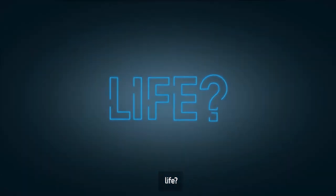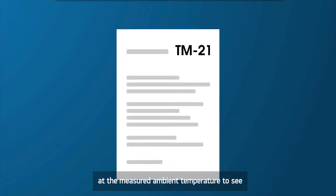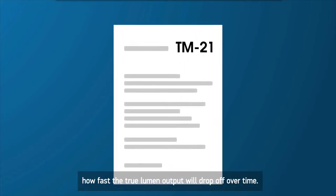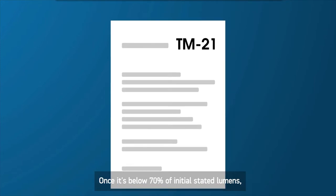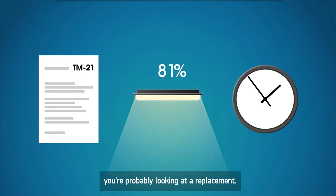And what about life? How long will those lights really last? Ask the manufacturer for TM21 data at the measured ambient temperature to see how fast the true lumen output will drop off over time. Once it's below 70% of initial stated lumens, you're probably looking at a replacement.